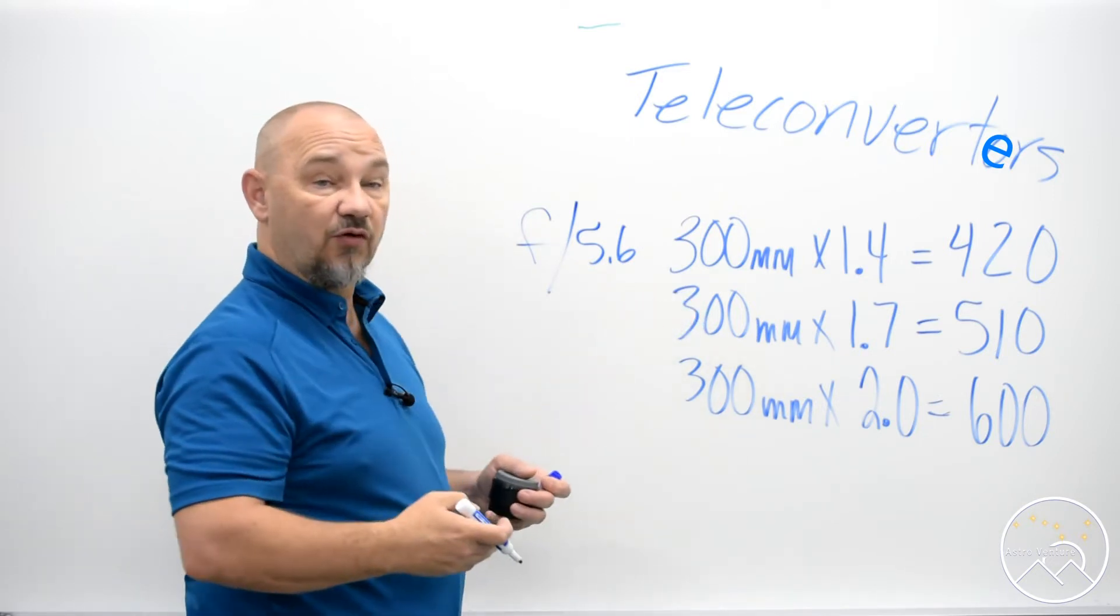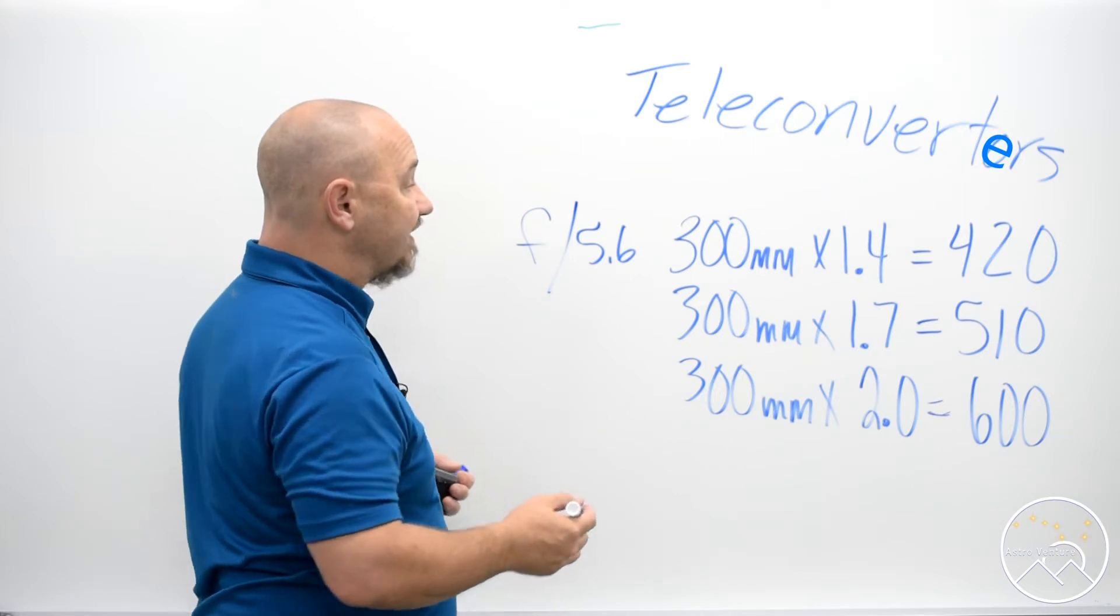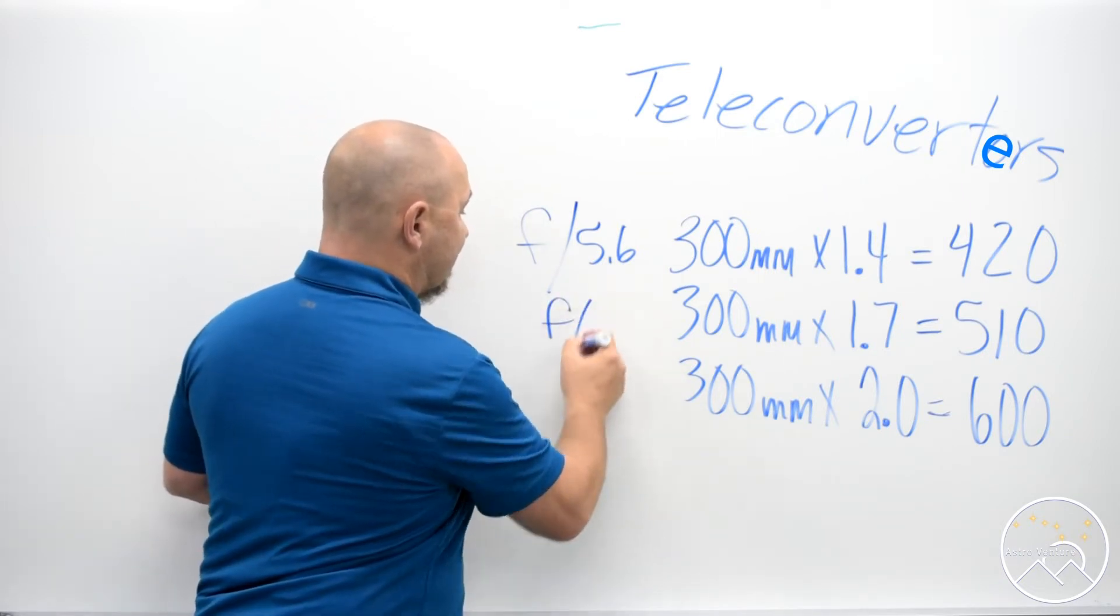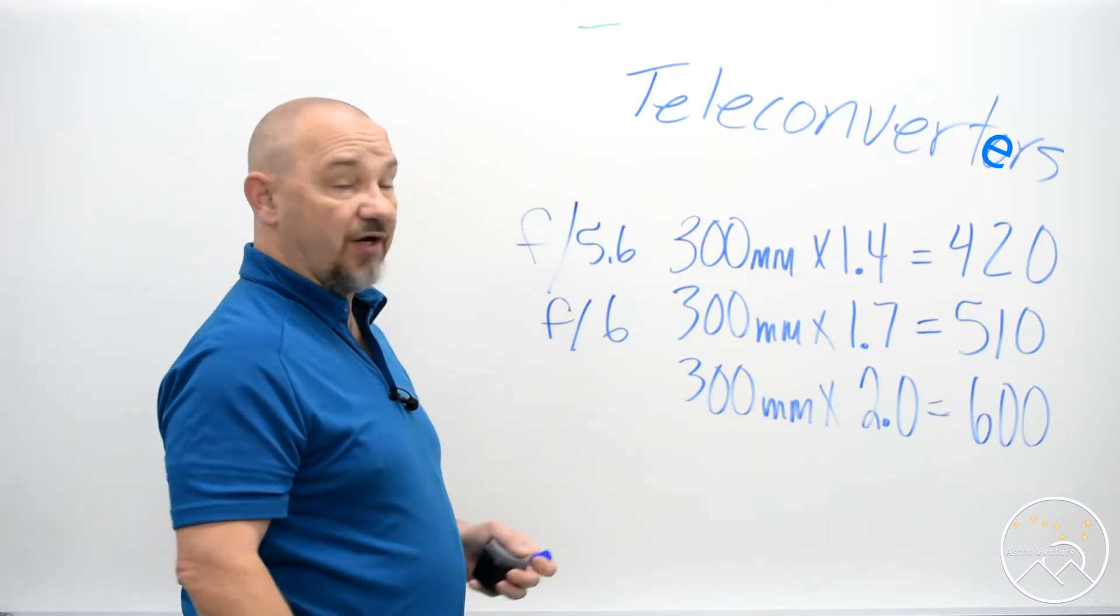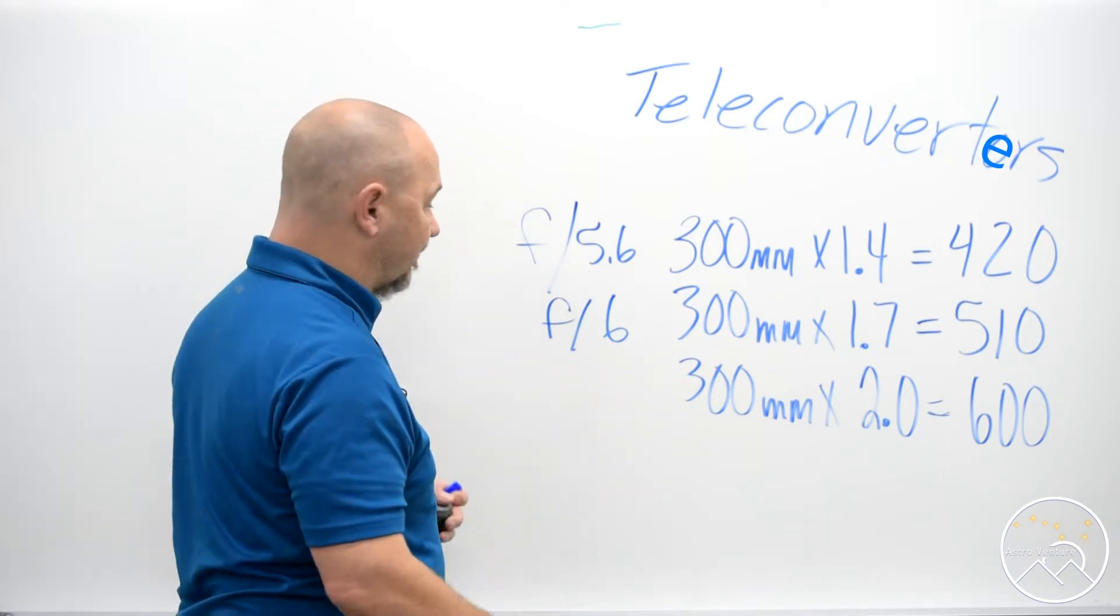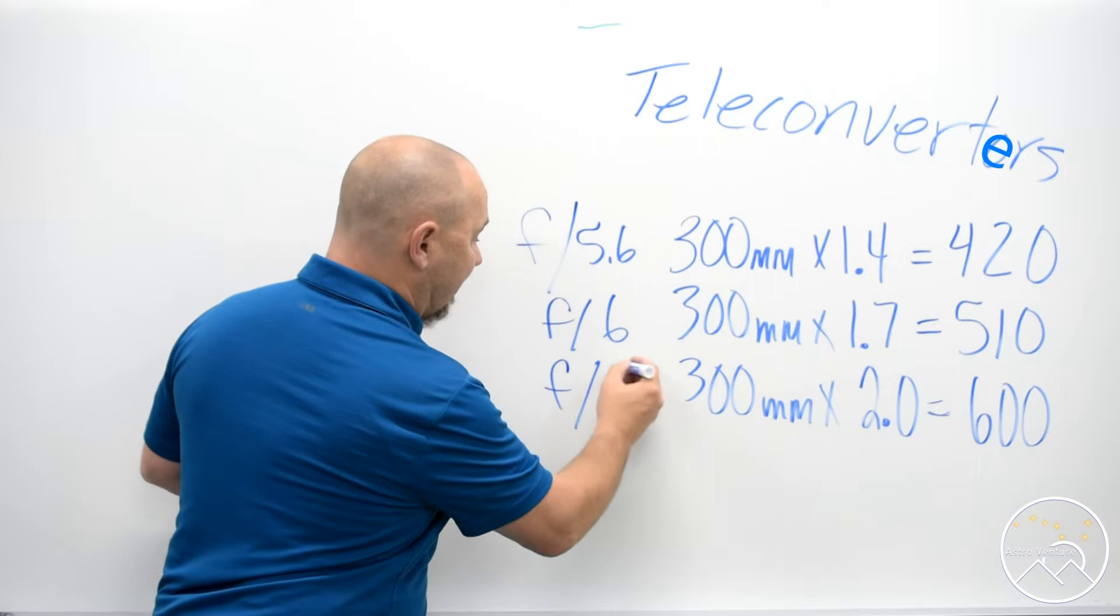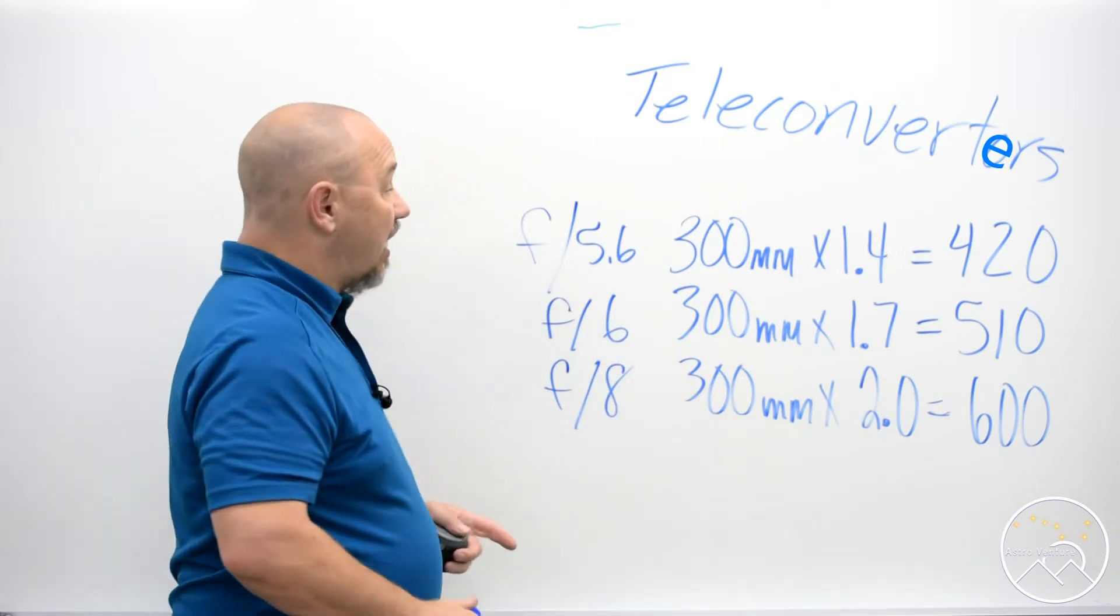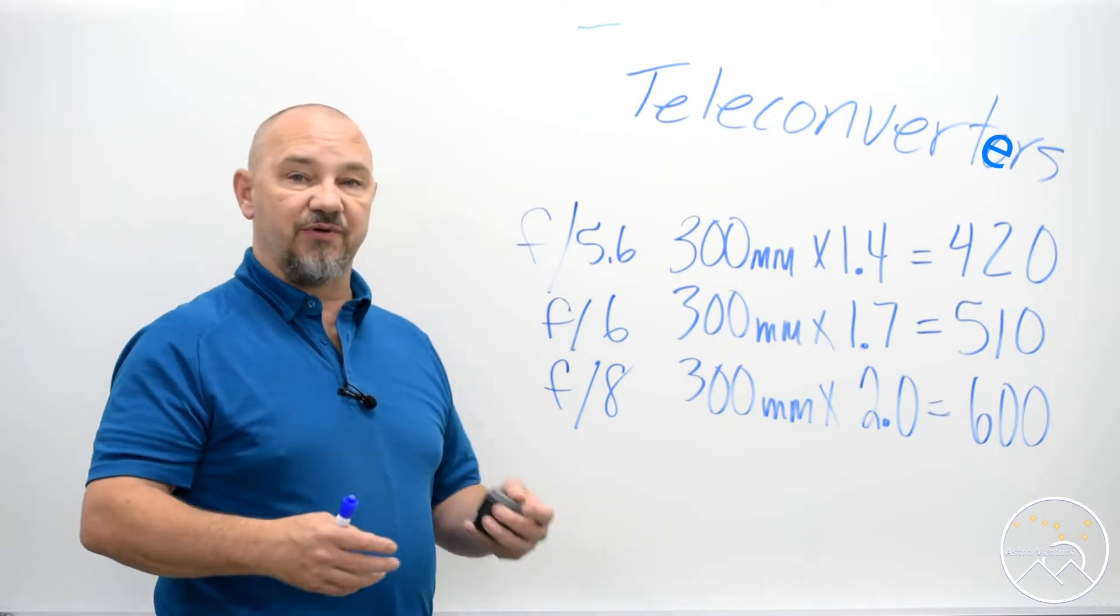This same F4 lens using it at a 1.7 is going to take you up to an F6 and then at 300mm that 2x teleconverter is going to take you all the way to an F8. So you're choking off a good bit of light by doing so. So it's a bit of a trade-off.